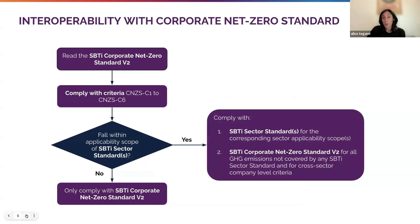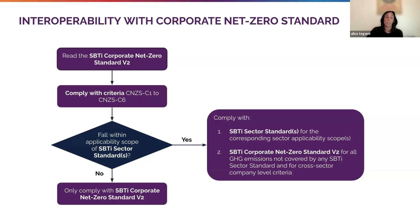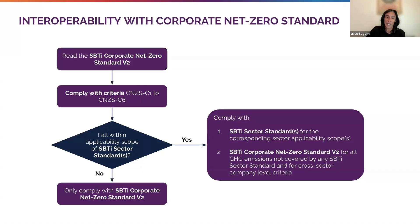How does interoperability work? All companies shall use the SBTI Corporate Net Zero Standard as the starting point for setting SBTI targets. They shall calculate a complete greenhouse gas emission inventory and determine the applicability of SBTI sector-specific requirements. When a company falls within the scope of a sector standard, it shall comply with all the applicable criteria within that standard, but only for the activities and emissions in the boundary of the sector standard itself. Emissions of the company falling outside the scope of a sector standard are handled in line with the SBTI Corporate Net Zero Standard.